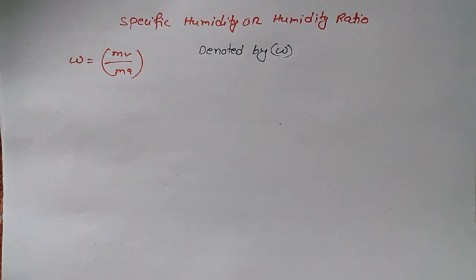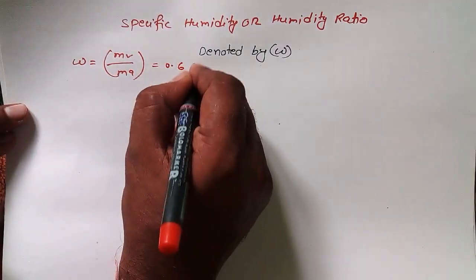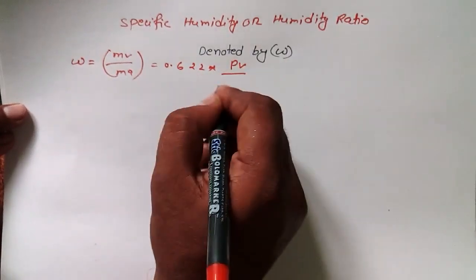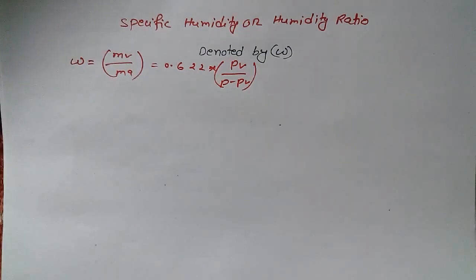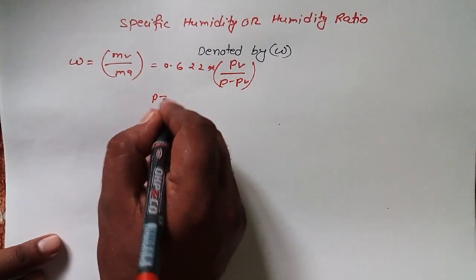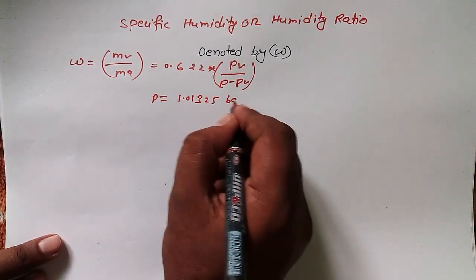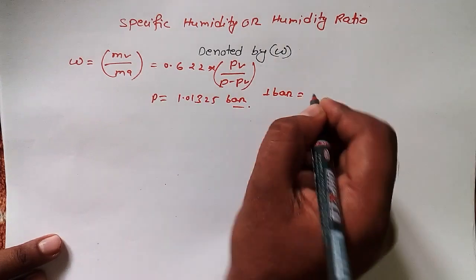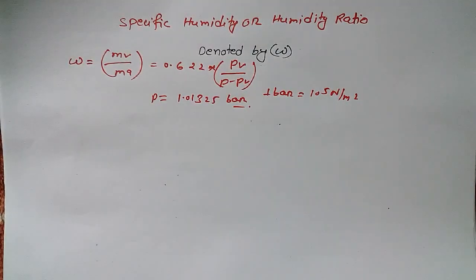We have another formula: omega is equal to 0.622 into Pv by P minus Pv, where Pv is the partial pressure of the water vapor, and P is the total pressure. If P is not given, take it as atmospheric pressure, that is 1.01325 bar. One bar is equal to 10 to the power 5 Newton per meter square — that is the unit of pressure in SI.